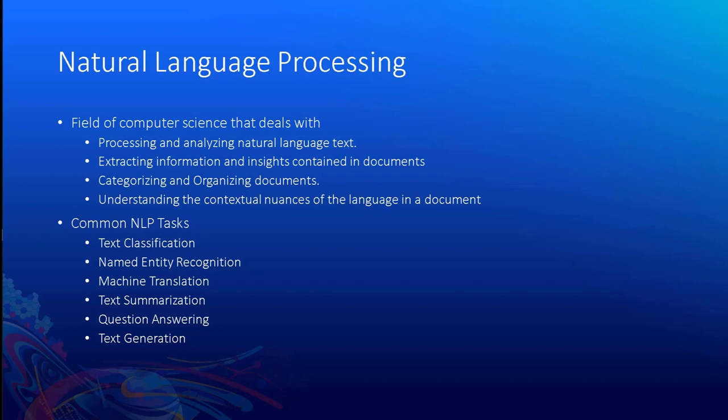There is machine translation, where a computer can translate text from a source language to a target language. We have text summarization, where a computer can generate a meaningful and concise summary from a longer piece of text. We have question answering systems, where we can pass a longer text document and ask questions from that text and the system answers based on what is written. There is also text generation, where we can pass a snippet of text and the system predicts what can be written next that is meaningful.